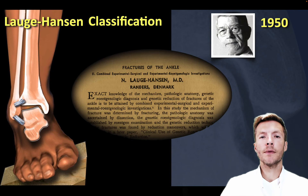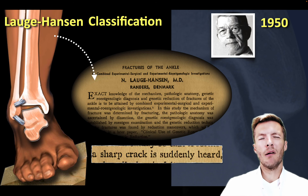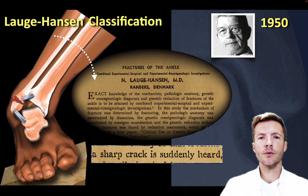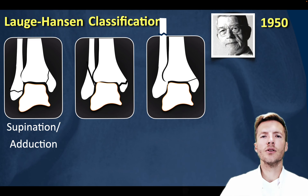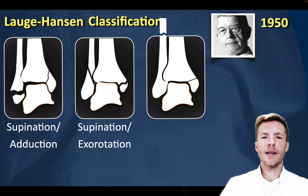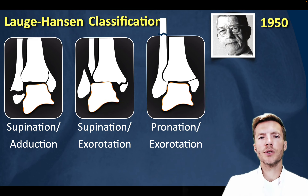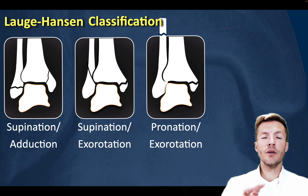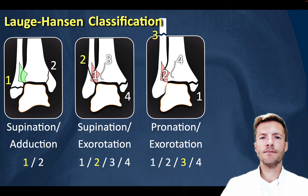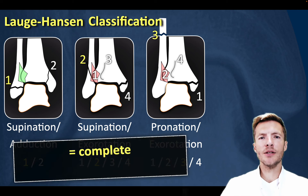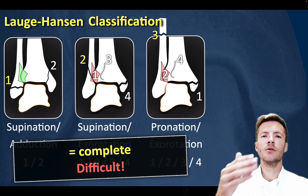This is where the Lauge-Hansen classification comes in. In this classification, lower leg specimens were fixed on boards and a force was applied in a certain direction until a crack was heard, then they examined what kind of fracture had occurred. They categorized several subtypes, of which three are by far the most common: supination adduction, where the foot is in supination and an adduction force is applied; supination axial rotation; and pronation axial rotation, where the foot is in pronation and an axial rotation force is applied. After defining the subtype, we have to properly assess the anterior syndesmosis and the malleolus tertius or posterior malleolus to correctly grade the subtype. It is complete but also difficult to use, so practice is essential.